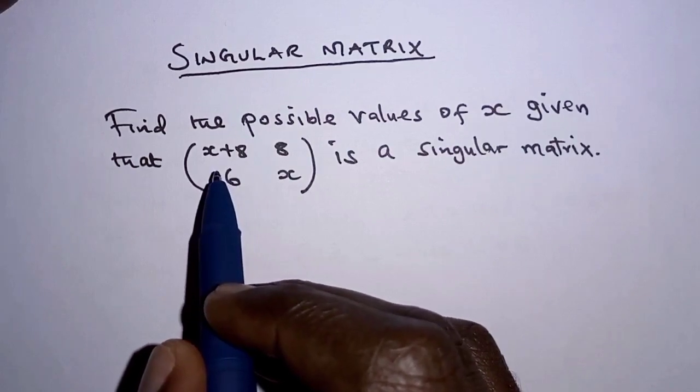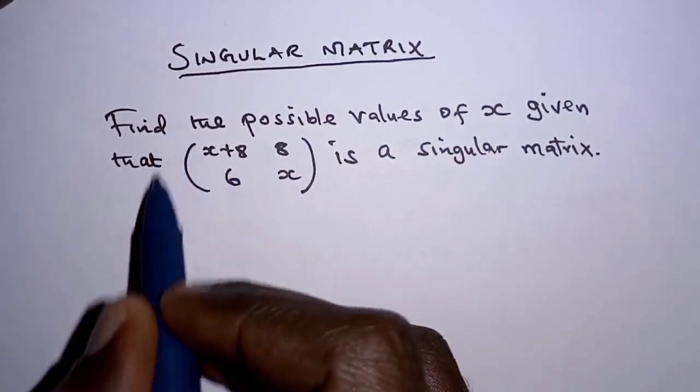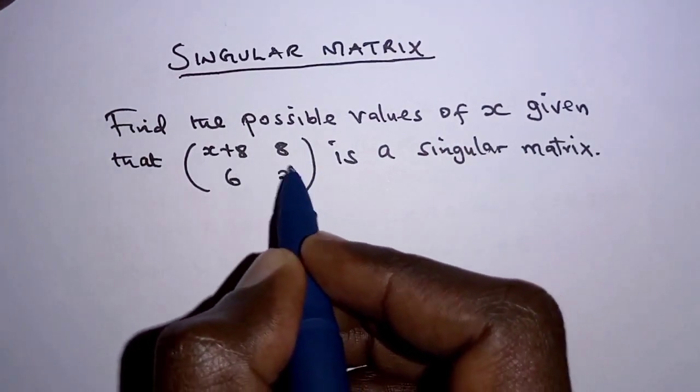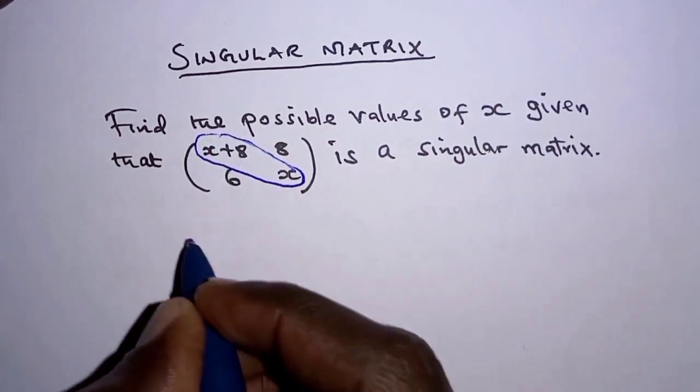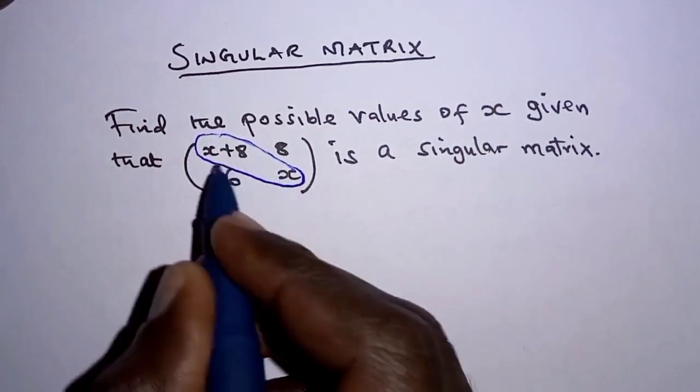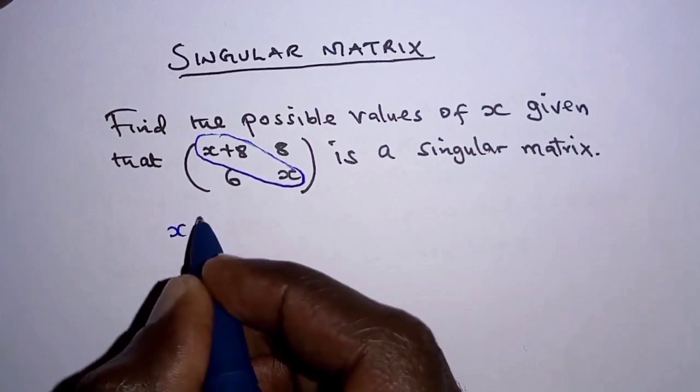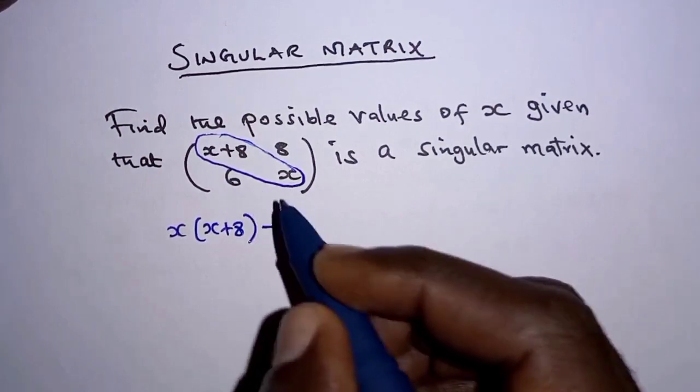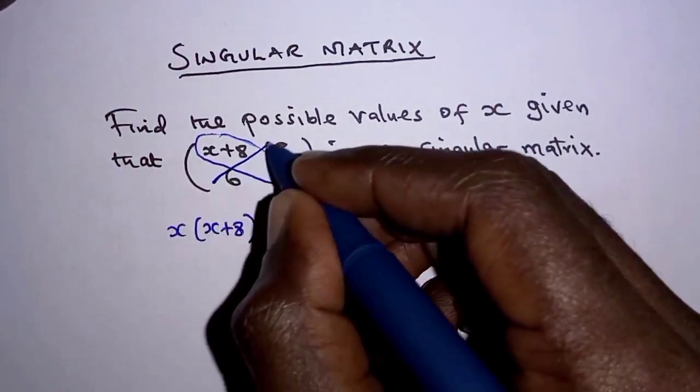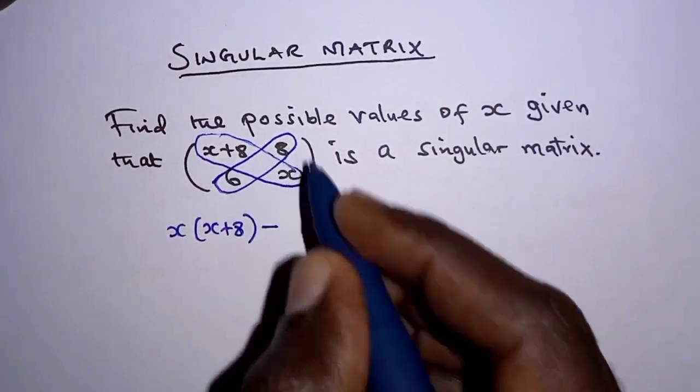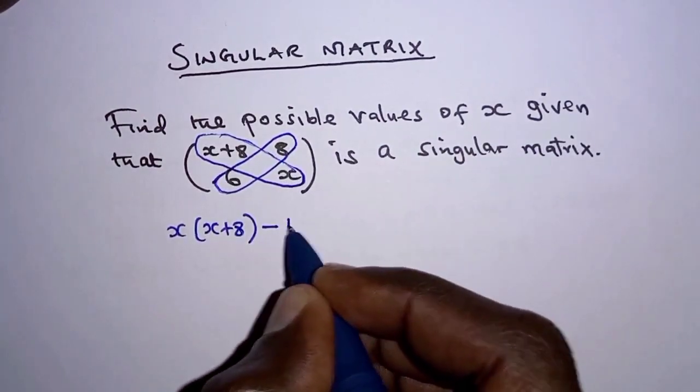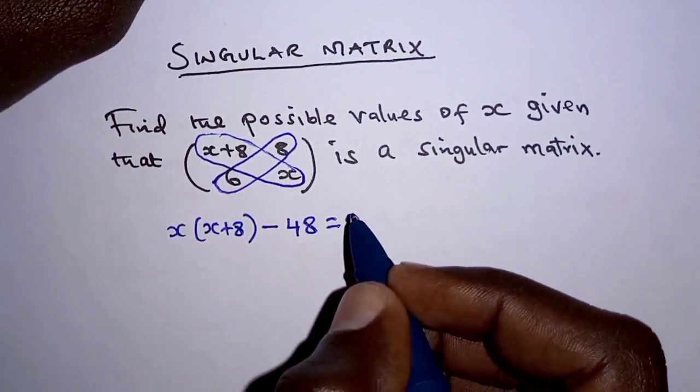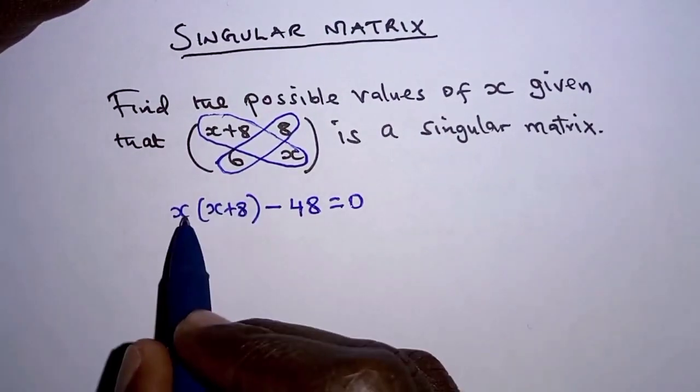We determine the determinant of this matrix by multiplying the elements of the leading diagonal: X times (X+8). Then subtract the product of the elements in the second diagonal: 6 times 8, which is 48. This should give us 0 because the determinant is 0.